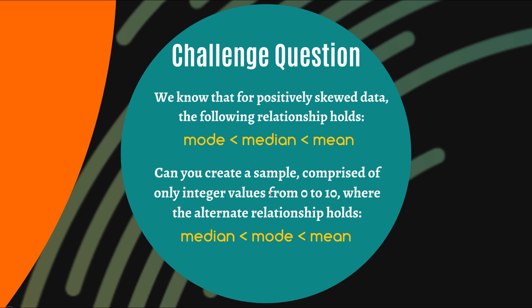We know that for positively skewed data, the following relationship holds where the mode is less than the median and that's less than the mean. Can you create a sample comprised of only integer values from 0 to 10 where the alternate relationship holds? And that's where the median is less than the mode, which is less than the mean. So I've kind of swapped these two around. So can you come up with a sample of data that's made up only of integers where your median is less than your mode—and make it a single mode, right? I'm not allowing bimodal samples here—and both of those are less than the mean.